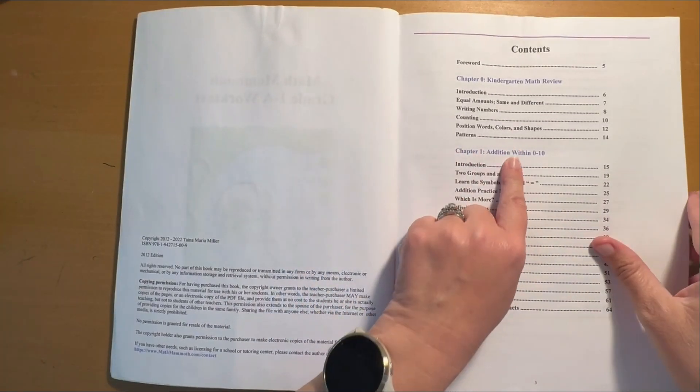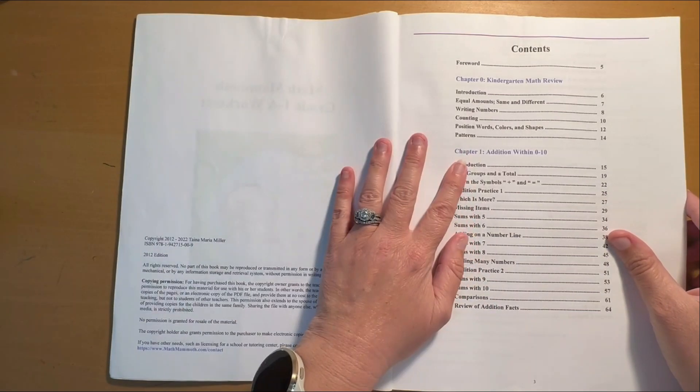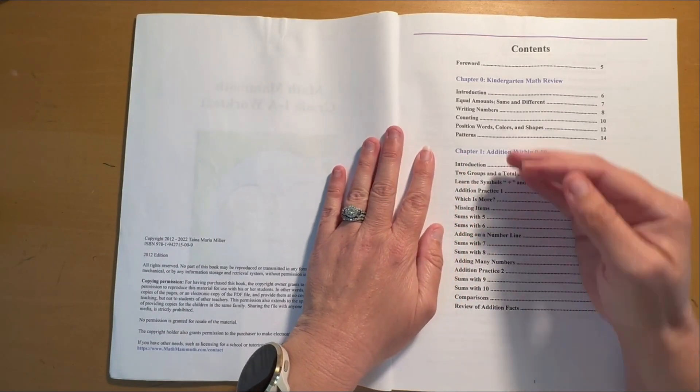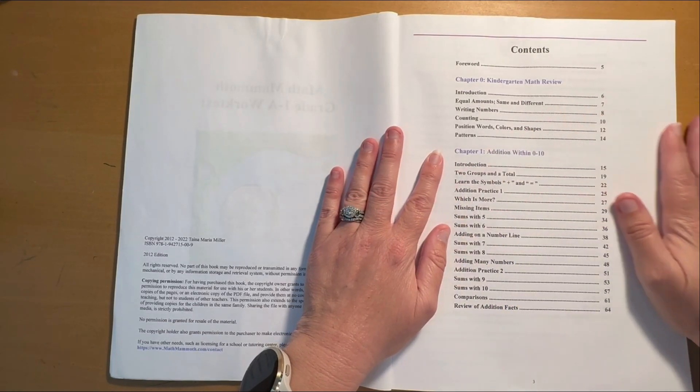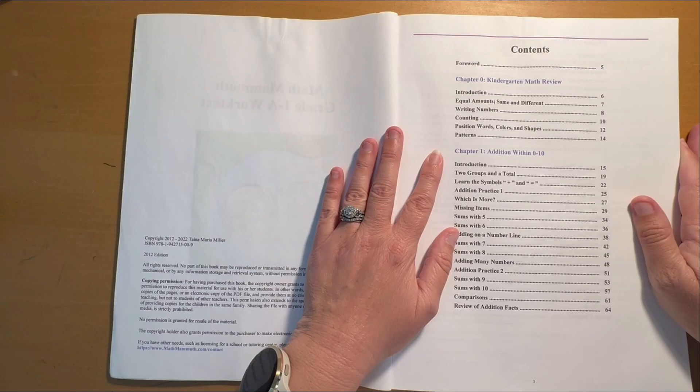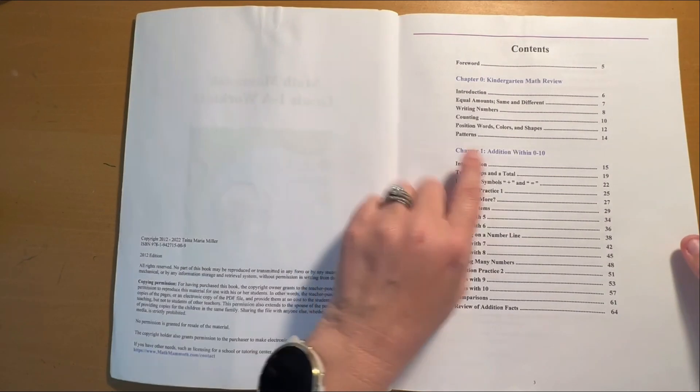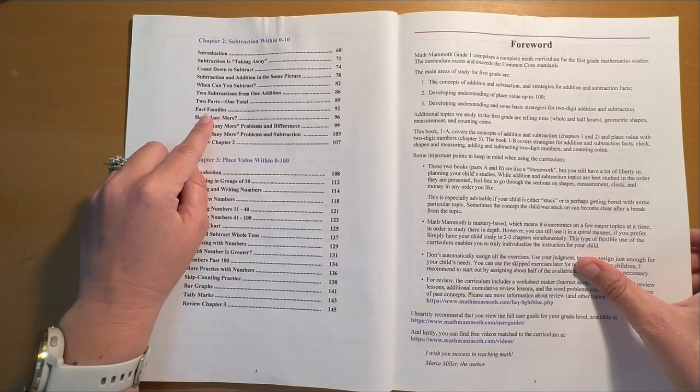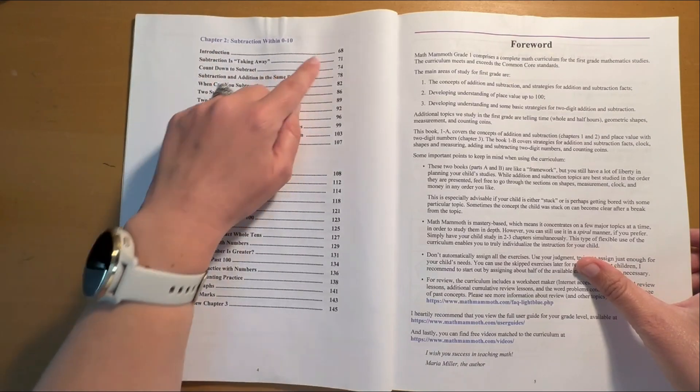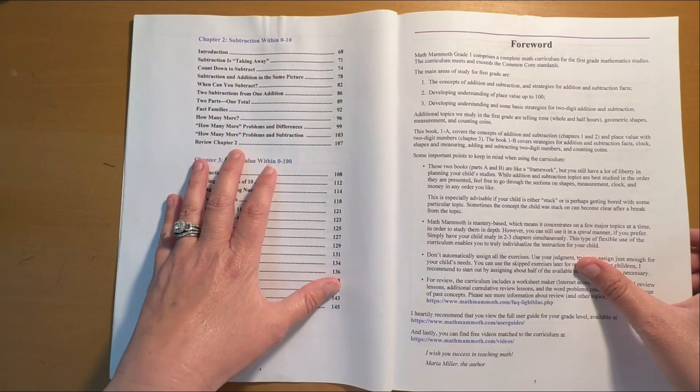Then we're going to jump into addition. This is more of a mastery type program, meaning it's going to go really deep into a subject, and then there's not going to be a lot of review of that subject later on. Chapter one is addition within 10. Then you're going to jump into subtraction within 10. You'll be doing that for a while. You can see it's almost 40 pages, so it's a big section.